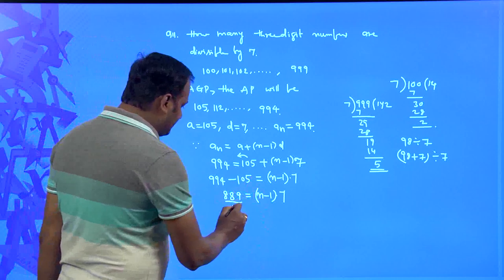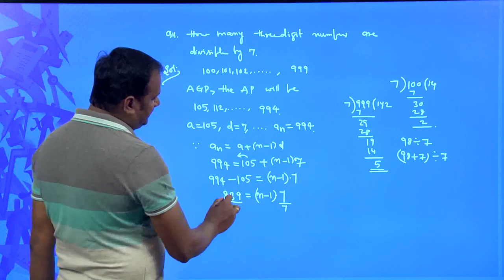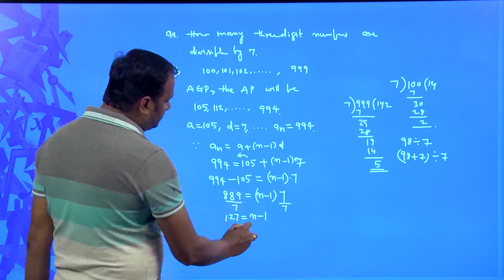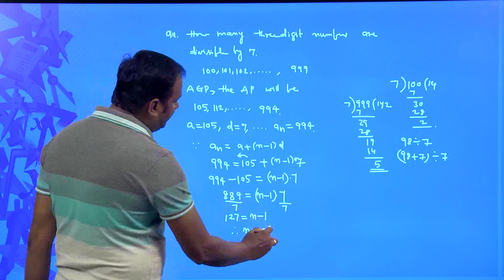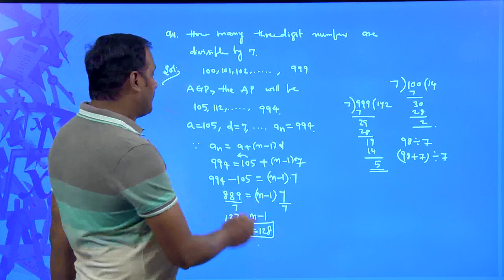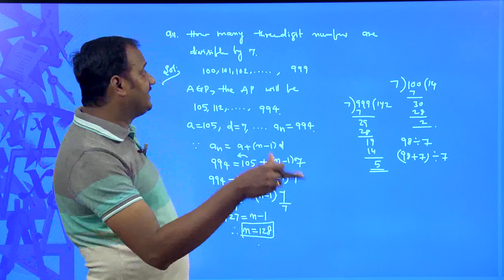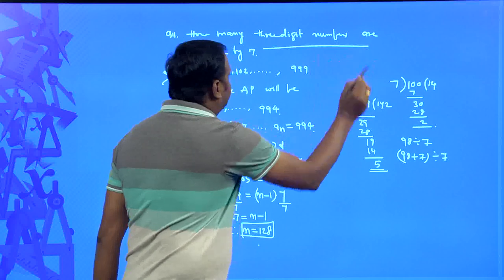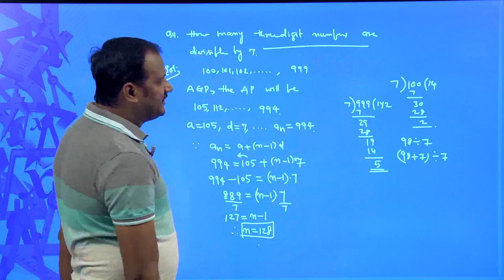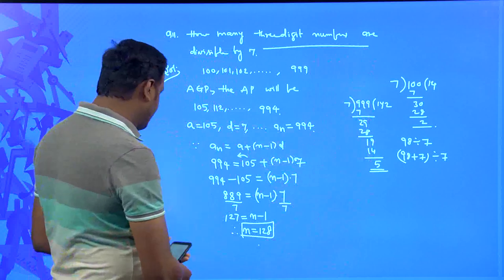Therefore n = 128. This means there are a total of 128 three-digit numbers that are divisible by 7. This is how we can easily figure out the count of three-digit numbers divisible by 7.